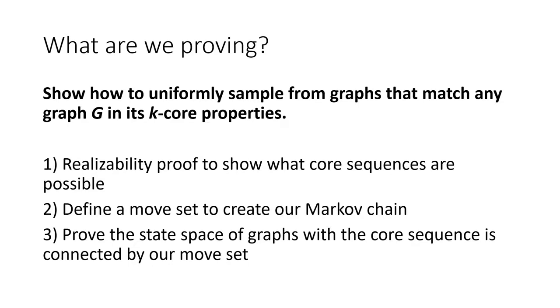There are three steps to this. First, we have to have a realizability proof to show what core sequences are even possible. Just like not every degree sequence is possible, not every core sequence is possible. Next, we need to define a moveset to create our Markov chain. The configuration model has the switch, ours is a little bit more complicated. And finally, we need to prove that the state space of graphs with the core sequence is connected by our moveset. This is very similar to proof to how this is done in the configuration model.